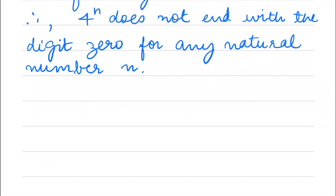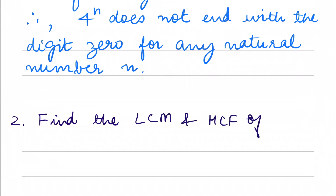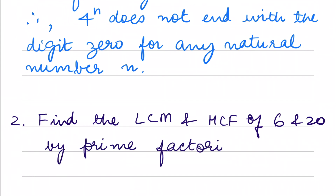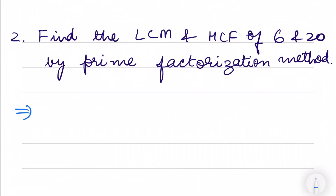So that was one kind of application. Another application we've been using a lot is finding LCM and HCF by the prime factorization method. Let's find the LCM and HCF of 6 and 20 using the prime factorization method. The factors of 6 would be 2 into 3, and for 20 it will be 2 into 2 into 5.